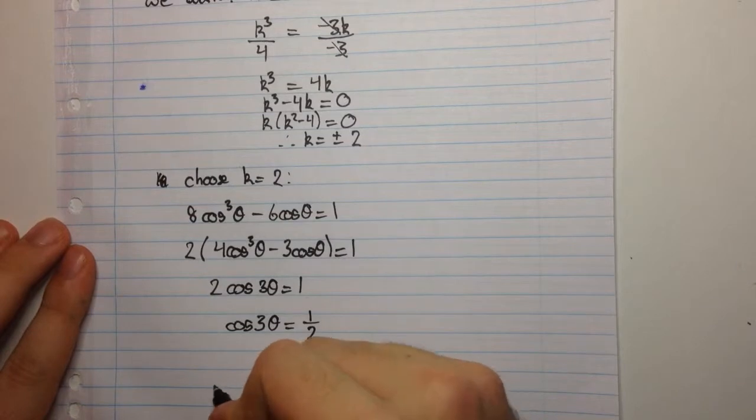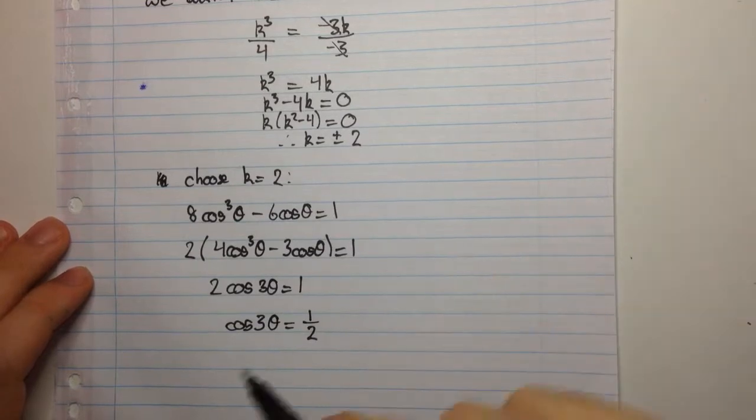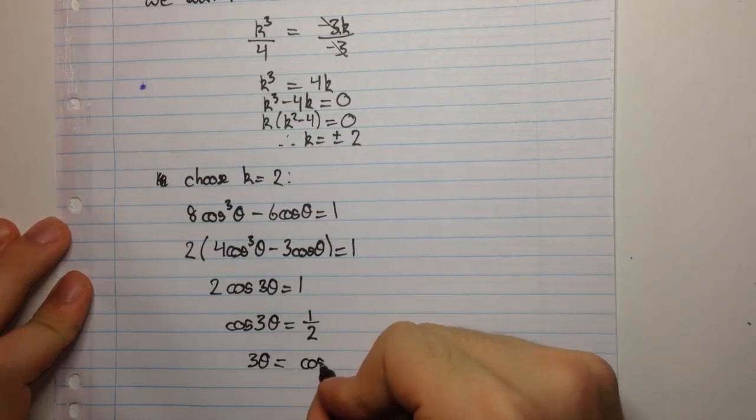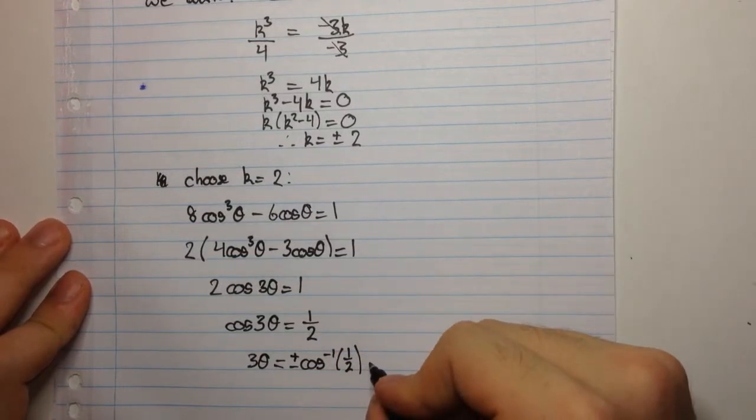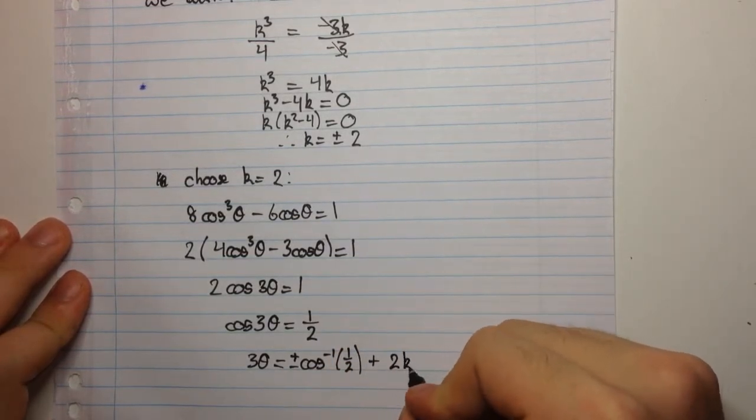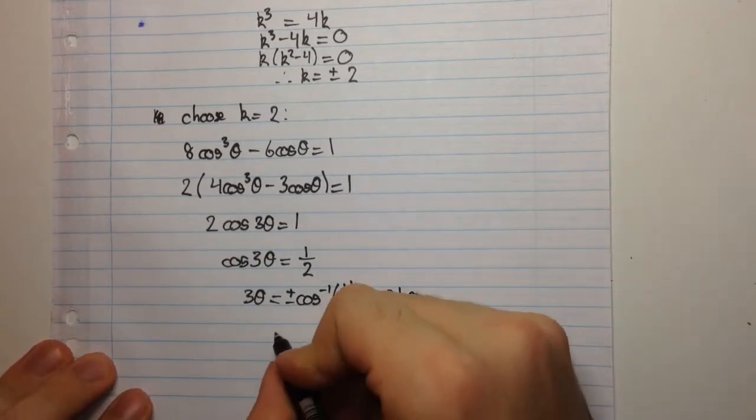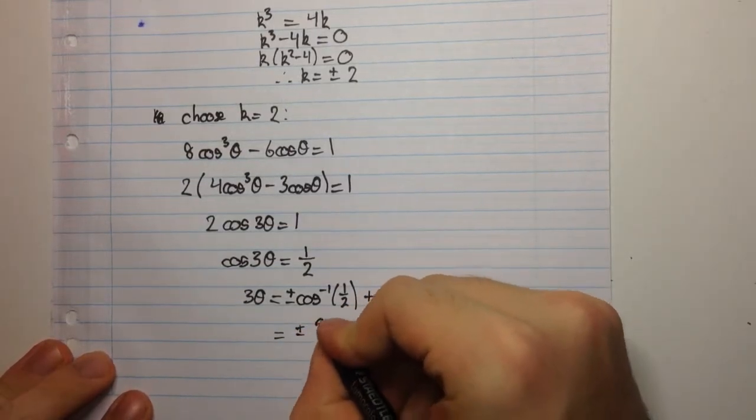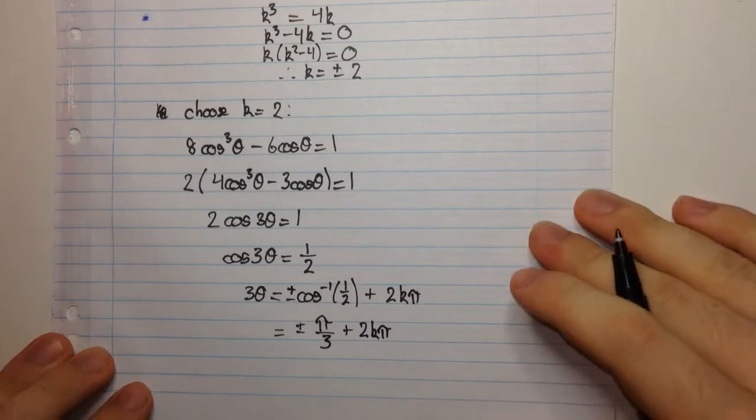And the way we solve this, if you remember back to your trig maths where you learnt the general solutions to a trig equation such as this one, this is going to be 3θ is equal to cos inverse of a half, plus 2kπ. Now, what's cos inverse of a half? Well, if you put it into your calculator, or you might know, it's 60 degrees, or π on 3 radians. And we like to work with radians here. So it's π on 3 radians, plus 2kπ.